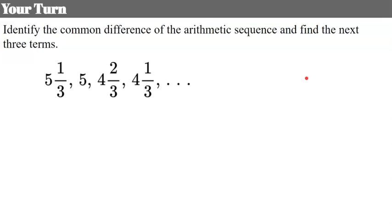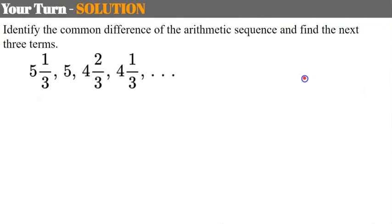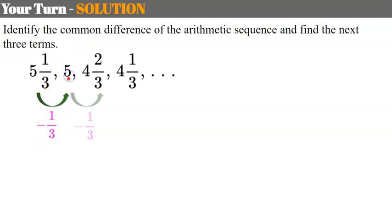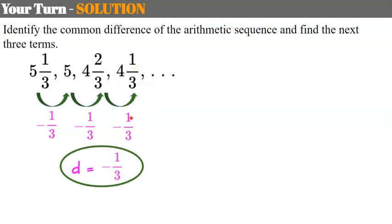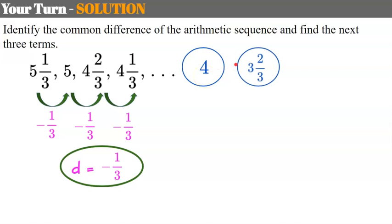Your turn again — find the common difference and the next three terms. Welcome back. Our common difference here is negative one-third; the sequence is going down. In an arithmetic sequence, we add — sometimes we need to add a negative value. 5 plus negative one-third is 4 and two-thirds, 4 and two-thirds add negative one-third is 4 and one-third. Continuing: 4 and one-third add negative one-third is 4, 4 add negative one-third is 3 and two-thirds, 3 and two-thirds add negative one-third is 3 and one-third.